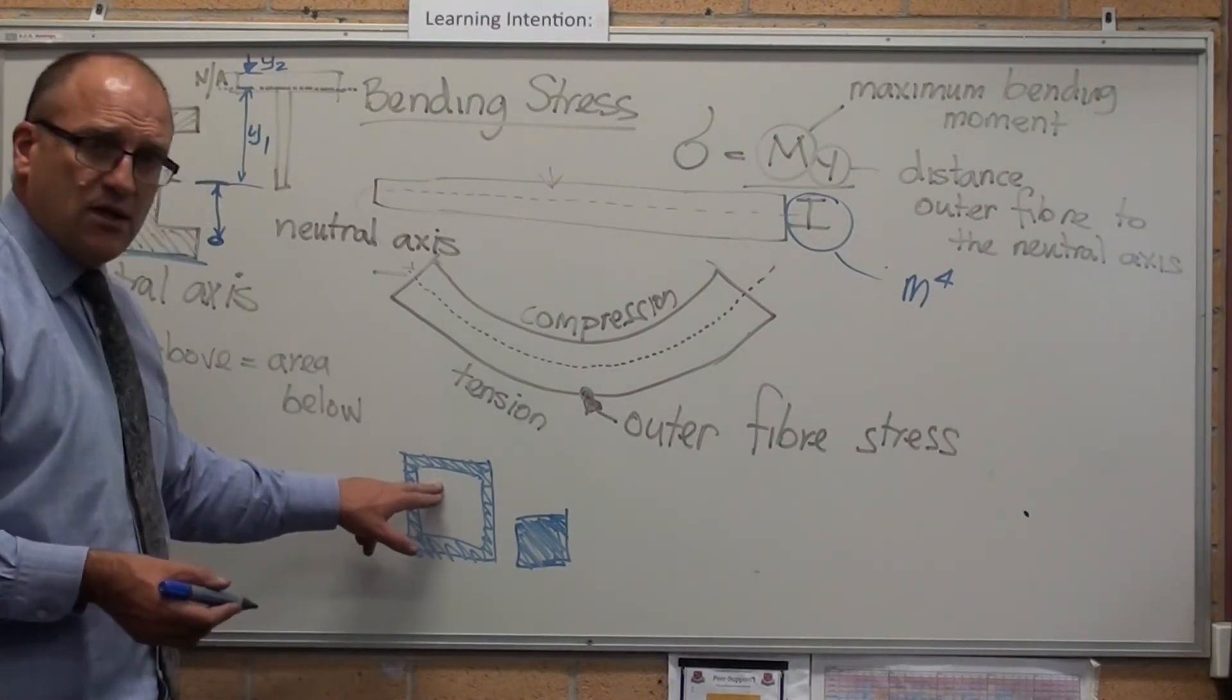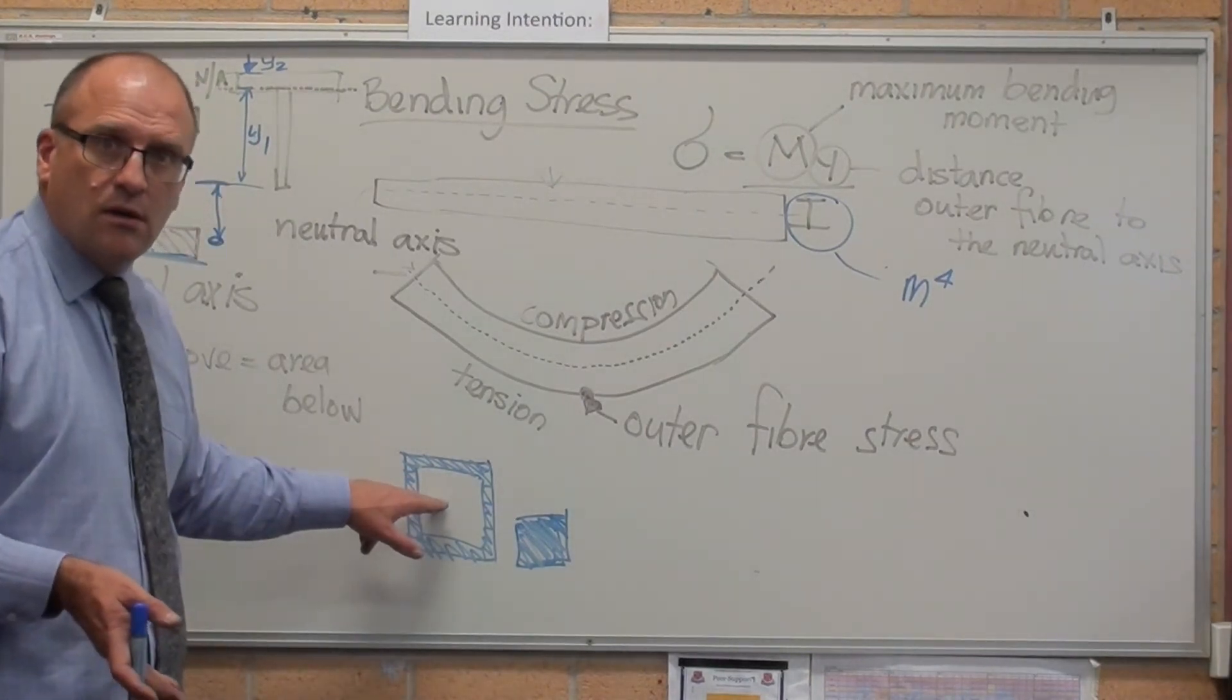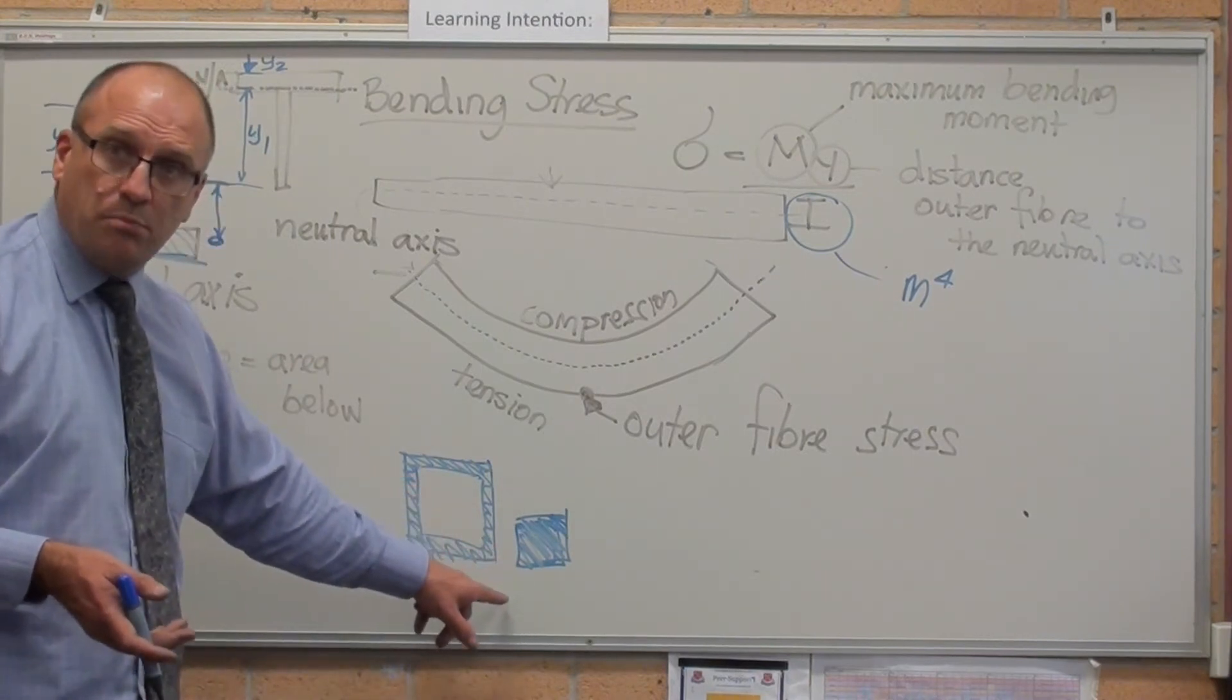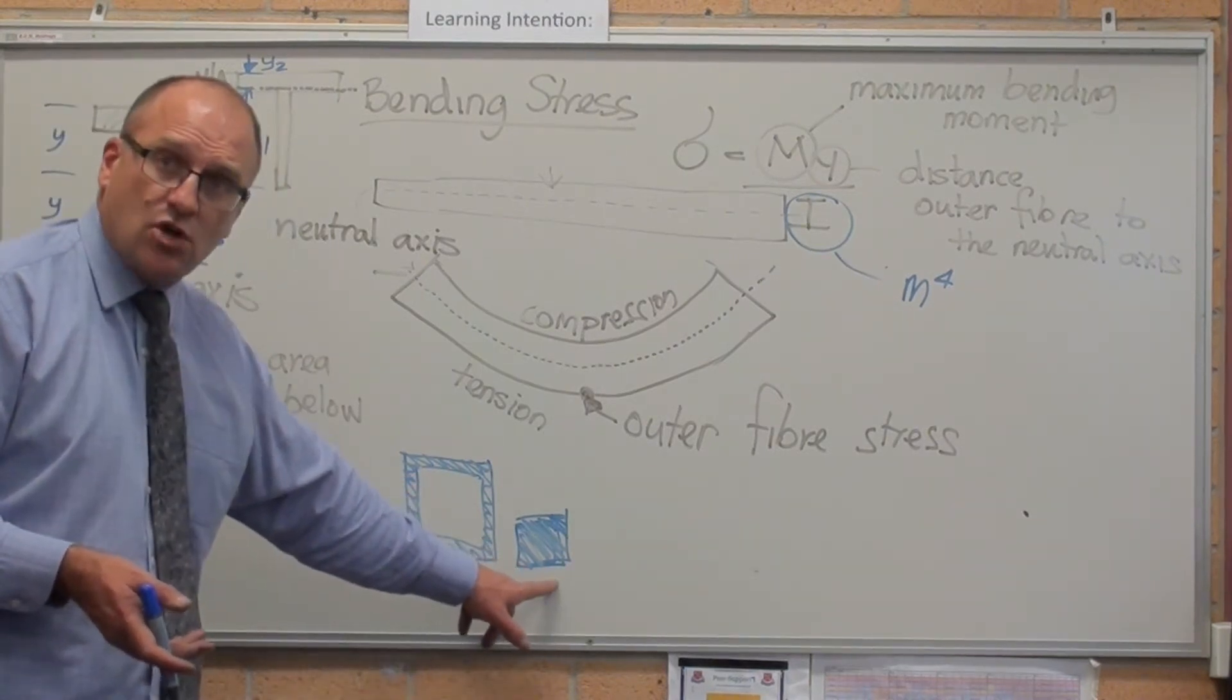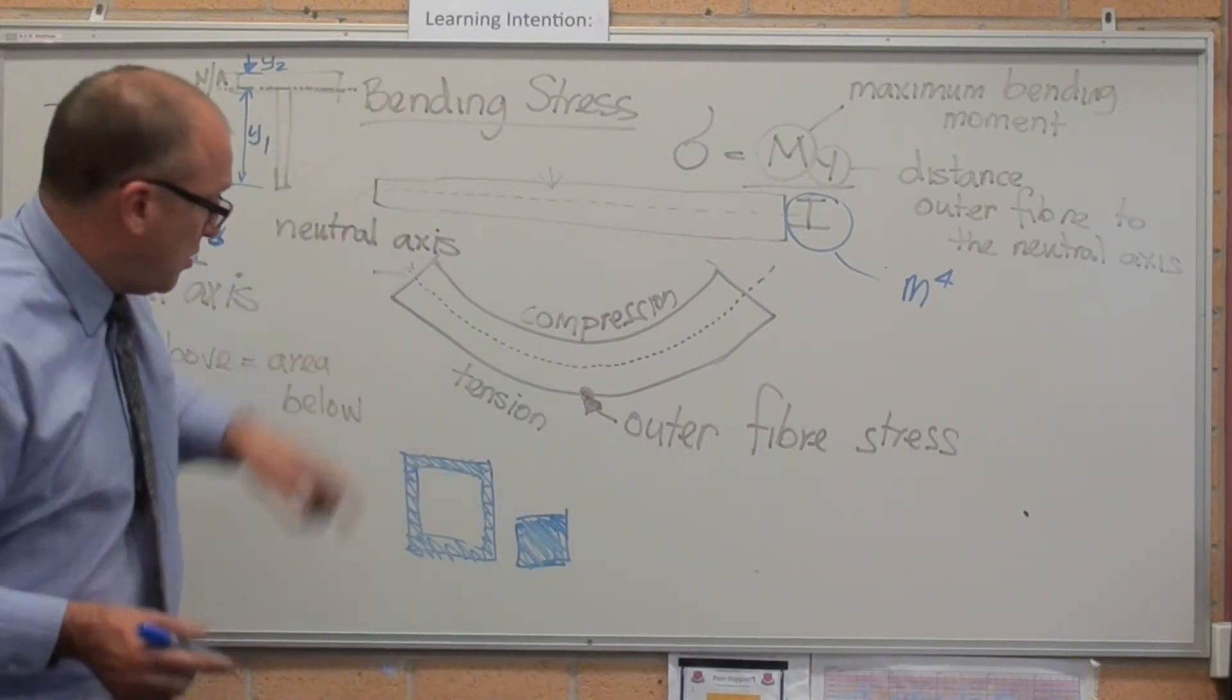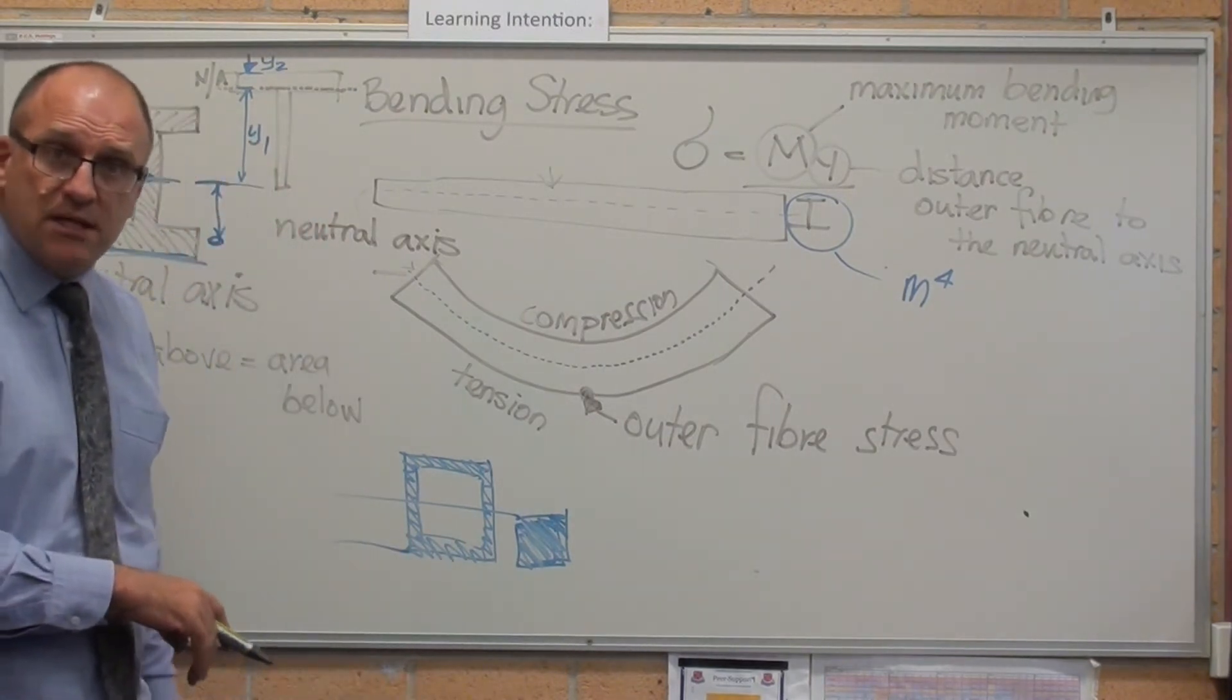If I was to get both those bars four metres long and set a car on it, I know which one of those two would bend more. It would be that one, just common sense. The one that's bigger, higher distance from the neutral axis to the outer fiber, does not bend so much.